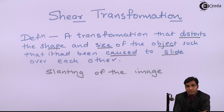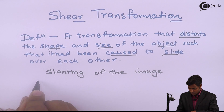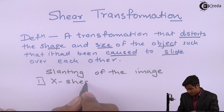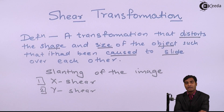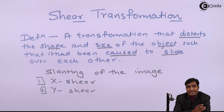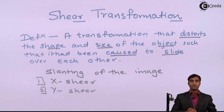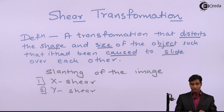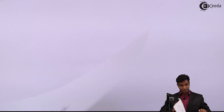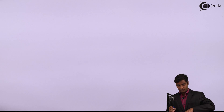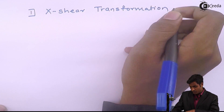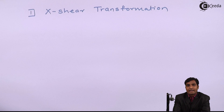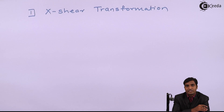Shear Transformations are of two types: first, X Shear, and second, Y Shear, which means that shear can take place along the X direction as well as along the Y direction. Now we will derive the resultant matrices for Shear Transformation along the X direction.